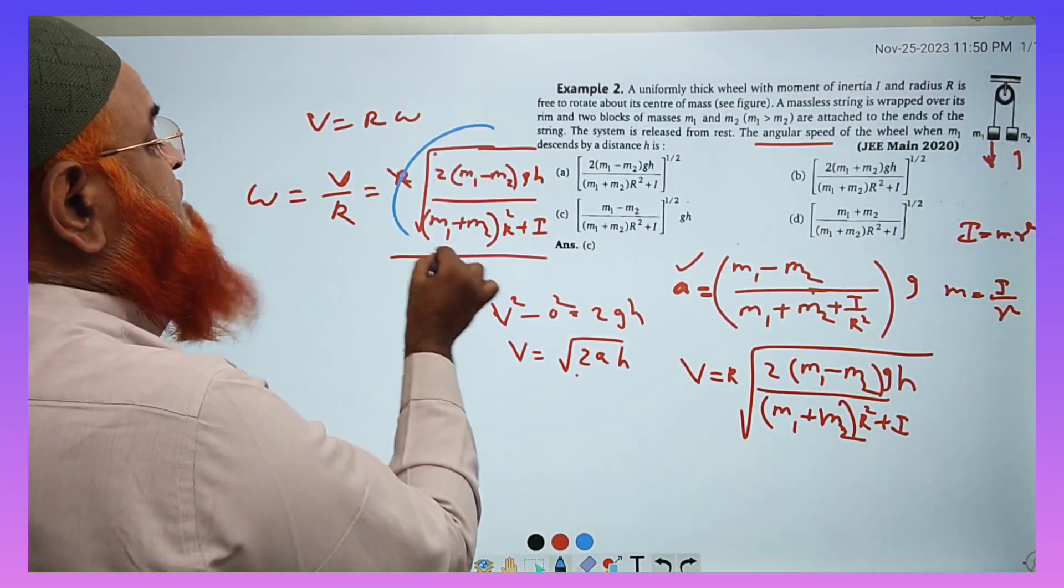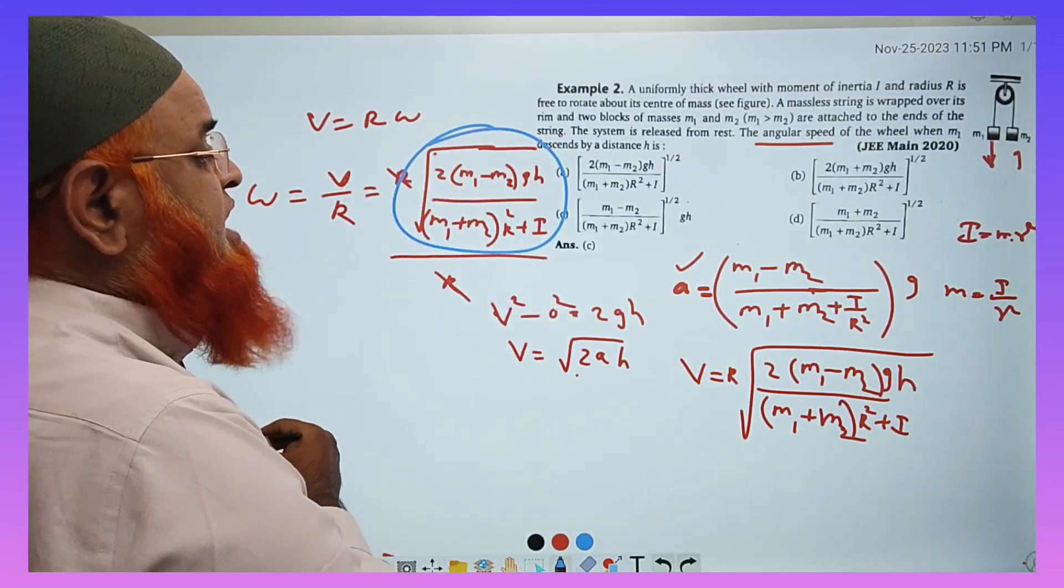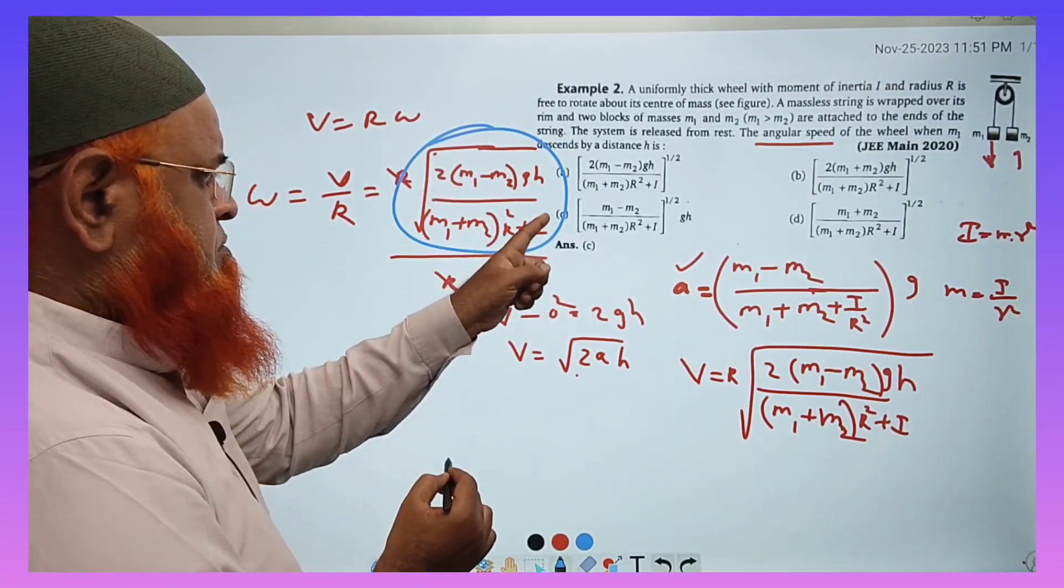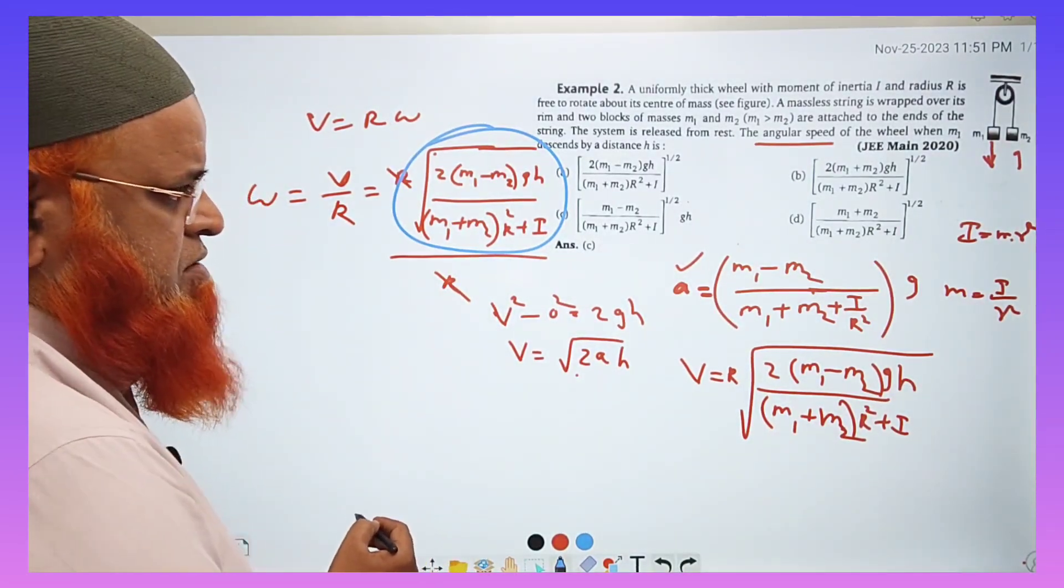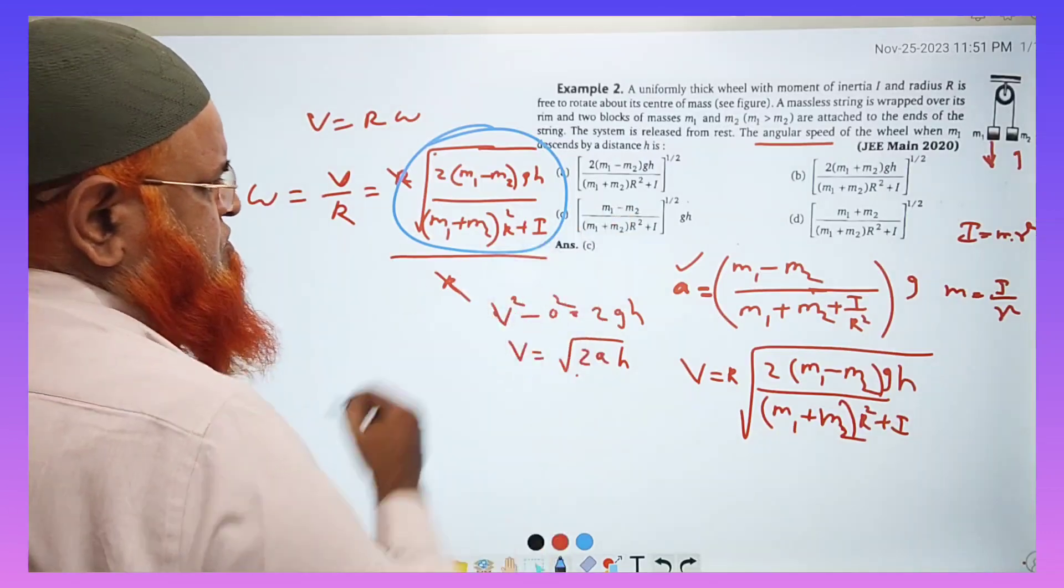So m1 minus m2, your correct answer is going to be I think, first option I think.